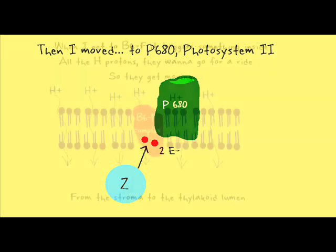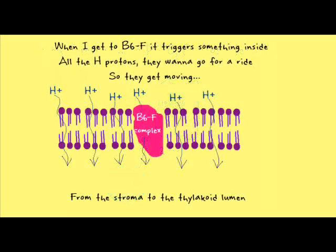When I get to b6f, it triggers something inside. All the H protons, they wanna go for a ride. So they get moving from the stroma to the thylakoid lumen.